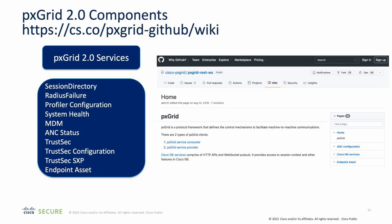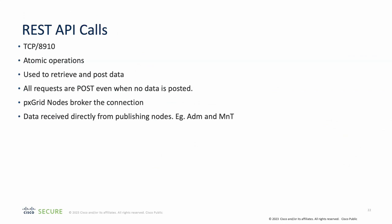PXGrid APIs are documented at a URL that will appear in the references. There are two ways to interface with PXGrid. The first is simple REST API calls, which run over port 8910 and are just as simple as ERS API calls — single operations to retrieve or post data into ISE. An important note: when using REST API, PXGrid nodes only act as a broker. Your actual REST API calls go directly to the nodes that make the data available, such as admin and MnT nodes.